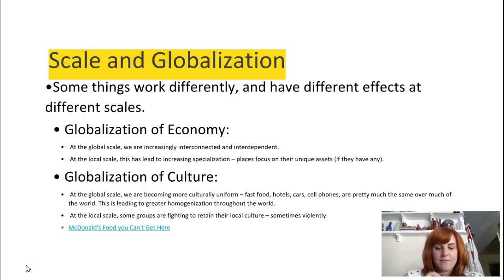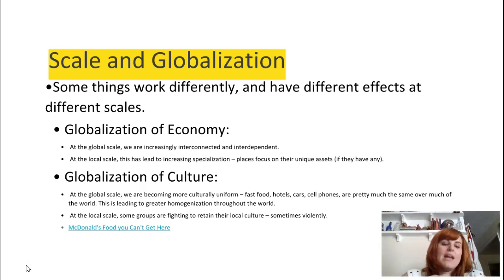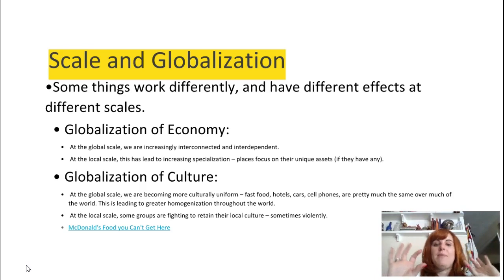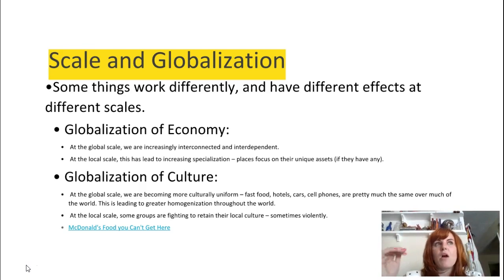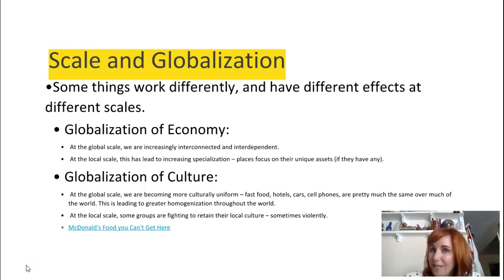There are two kinds of globalization we look at throughout the year. One is the globalization of the economy, and one is the globalization of culture. Economically, globalization means that we're becoming more and more interconnected and interdependent. The more often you go to different places outside of the U.S., you will notice that a lot of things we have here back home exist in other places that you visit.